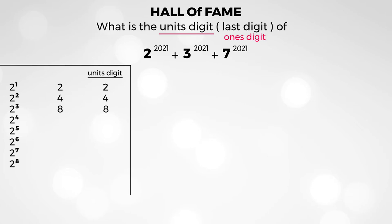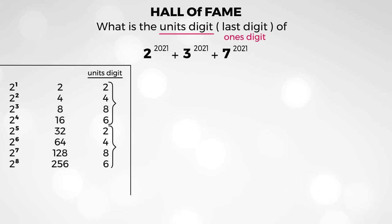Continuing to fill in the table: 2 to the 4th is 16, units digit 6; 2 to the 5th is 32, units digit 2; 2 to the 6th is 64, units digit 4; 2 to the 7th is 128, units digit 8; and 2 to the 8th is 256, units digit 6. Looking at the first 8 entries, you can see a repeating pattern: 2, 4, 8, 6, 2, 4, 8, 6.